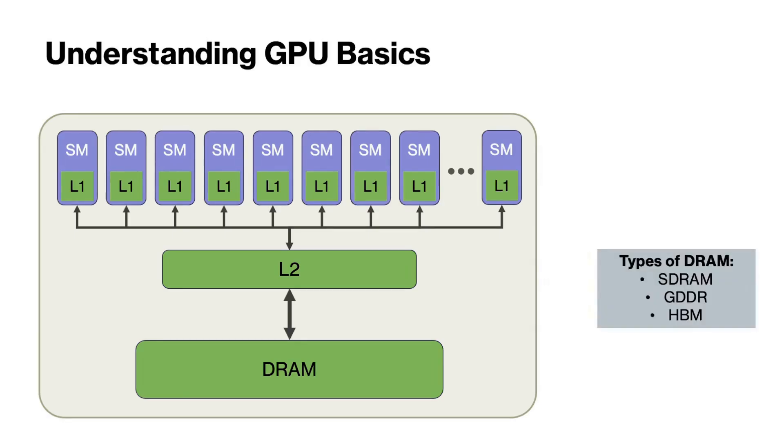There are many different types of DRAM like SDRAM, GDDR in the RTX series, and HBM that stands for high bandwidth memory and is used for high performance applications and LLMs.